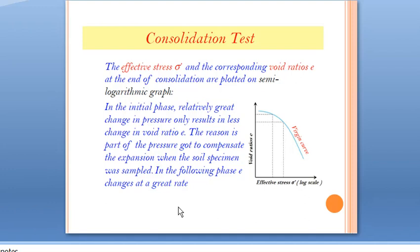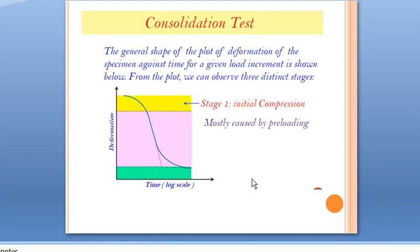Another test result is a graph between void ratio and effective stress. As effective stress increases, void ratio decreases. In the initial phase, a relatively large change in pressure results in only a small change in void ratio, because part of the pressure compensates for the expansion when the soil specimen was sampled. After that initial stage, there is a greater rate of change in void ratio.